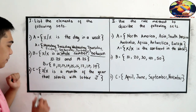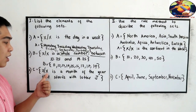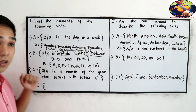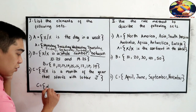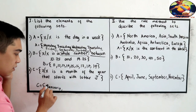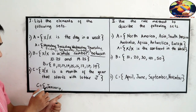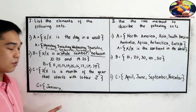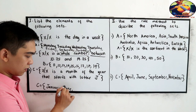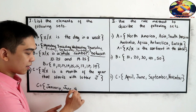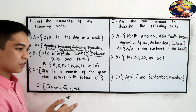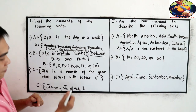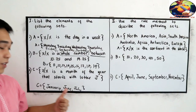Next, set C is x such that x is a month of the year that starts with the letter J. So we go through the months: January — yes. February, March, April, May — no. June — yes. July — yes. August, September, October, November, December — no. So C is equal to {January, June, and July}. Did you get it?